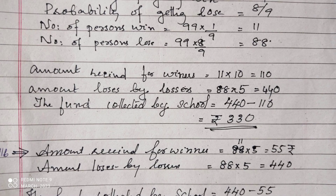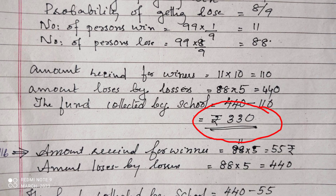In the question, it is given that those who lose the game have to pay rupees 5 to the school. Therefore, 88 persons will lose, so the amount received is 88 × 5 = 440 — the school is getting 440. And 110 rupees the school has to pay. Therefore, the fund collected by the school is 440 minus 110. The answer is rupees 330.